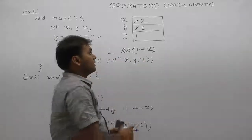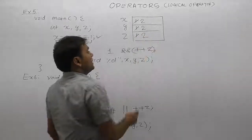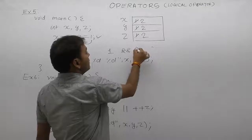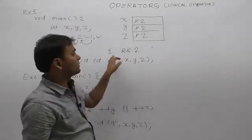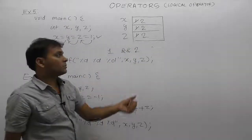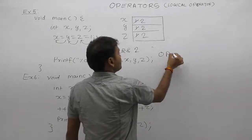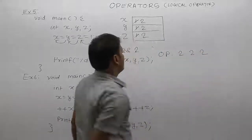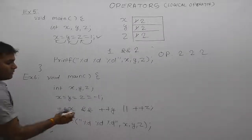Again, the first condition is true. For the second condition, the incremented value of z is used — z becomes three and is replaced. First condition is true, second is also true, so the overall expression is true. The output displays values of x, y, z — therefore the output of this program is x=2, y=2, z=2.